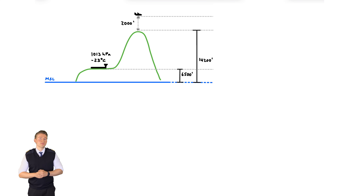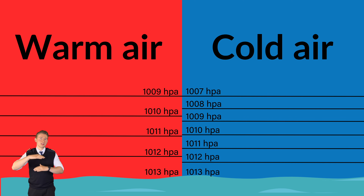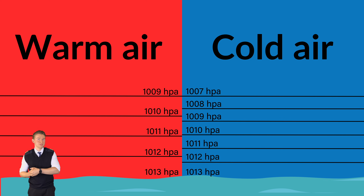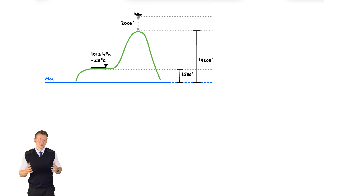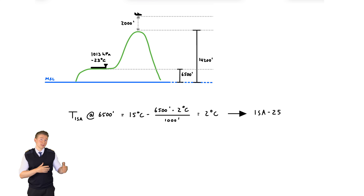To do this, we first have to figure out if the temperature is above or below ISA, since in cold air the isobars are located much closer together than in warm air, leading to the indicated altitude being more than the true altitude. The question states a QNH of 1013 hPa, which is why we can omit a pressure correction. For the temperature correction, let's look at what the ISA temperature should be at 6,500 feet. With the ISA lapse rate of minus 2 degrees per 1,000 feet and the ISA sea level temperature of 15 degrees Celsius, we get an ISA temperature at 6,500 feet of plus 2 degrees.